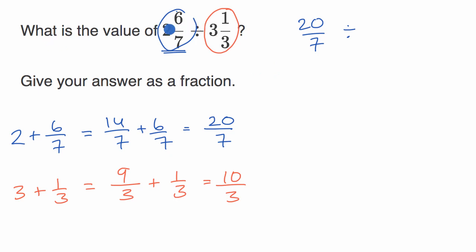So I've just rewritten this quotient, I guess you could say, as 20 over seven divided by ten over three.